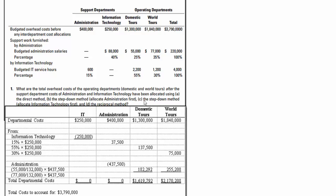On the third approach — part C — the step-down method with IT first, we're simply reversing the order. IT gets allocated first at 15%, 55%, and 30% of the $250,000. Then admin cost is allocated based on $55,000 divided by $132,000 (the total of $55,000 and $77,000) and then $77,000. It's the same approach with only the order changed, and we've still accounted for the $3,790,000 total.